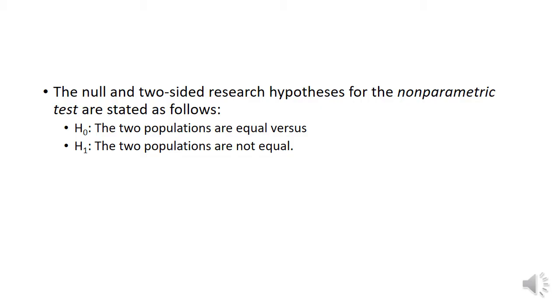This test is often performed as a two-sided test and thus the research hypothesis indicates that the populations are not equal as opposed to specifying directionality. A one-sided research hypothesis is used if interest lies in detecting a positive or negative shift in one population as compared to the other.